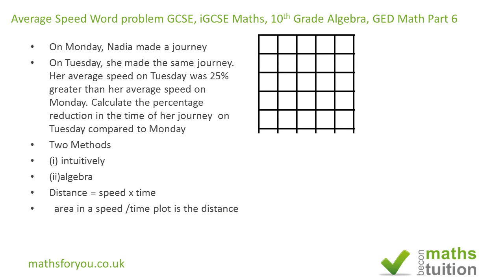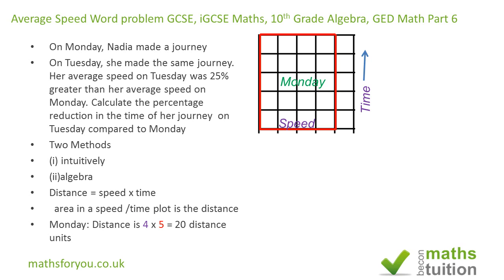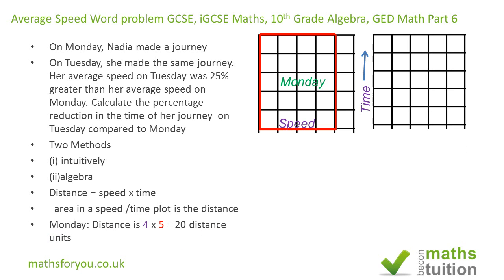I have a small grid where the vertical axis is speed and the horizontal axis is time. For Monday, I have four speed units and five time units, so the distance for Monday is four times five, which equals 20 distance units.